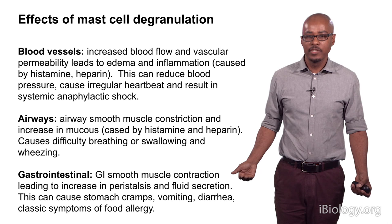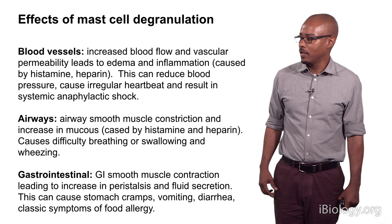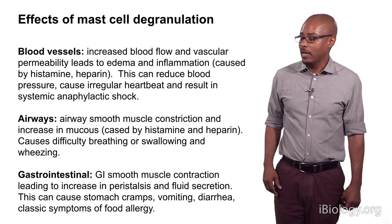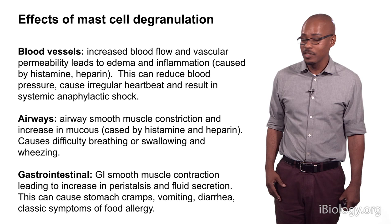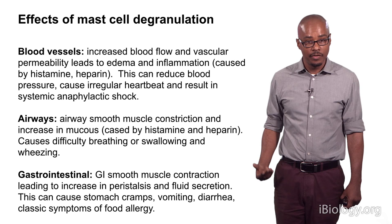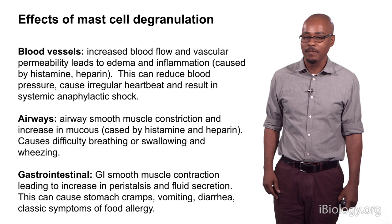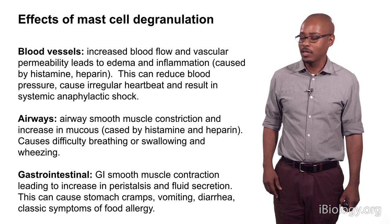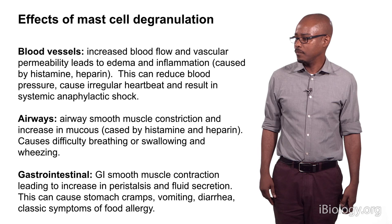After these mast cells degranulate, blood vessels start to increase in size because of the contents of the mast cells — you get increased blood flow to the area, which can cause reduced blood pressure, irregular heartbeat, and in some cases systemic anaphylactic shock. If this happens in the airways, you get airway smooth muscle contraction, an increase in mucus production, and this can cause difficulty breathing, swallowing, or wheezing. If you get exposed to peanut allergen in the GI tract, the GI smooth muscle cells contract, leading to peristalsis and fluid secretion, causing stomach cramps, vomiting, and diarrhea — classic symptoms of food allergy.